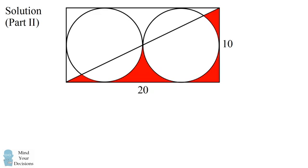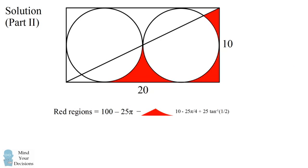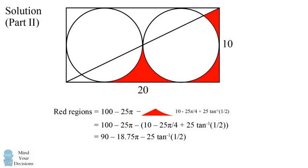Now we put this all together and calculate the area of the red regions. As illustrated in the first problem, the red regions equal 100 minus 25 pi. In our second problem, we remove the piece in the lower left-hand corner, which we just solved for. Substituting into our formula and simplifying, the area of the red regions equals 90 minus 18.75 pi minus 25 times the inverse tangent of 1/2, which is approximately 19.504.